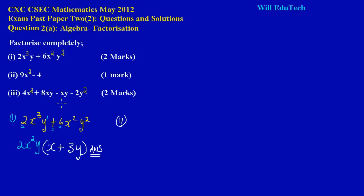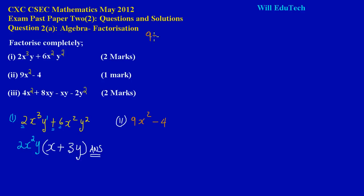In part 2 they have given us 9x² minus 4. If you notice, this is what we call a difference of two squares. The first term is a square term, and the difference means it is being subtracted by another square term. Note that 9 is the same as 3 times 3, which is the same as 3 squared. So 9 is a square term.